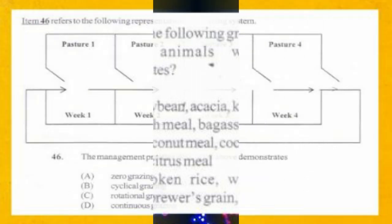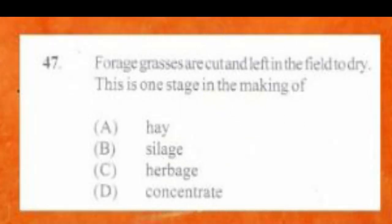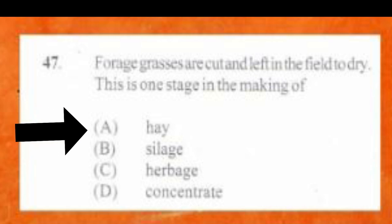Question number 46. Item 46 refers to the following representation of a grazing system. The management practice illustrated demonstrates: A. Zero grazing, B. Silage grazing, C. Rotational grazing, D. Continuous grazing. The answer is C, rotational grazing. Question number 47. Forage grasses are cut and left in the field to dry. This is one stage in the making of: A. Hay, B. Silage, C. Herbage, D. Concentrate. The answer is A, hay. Remember that for silage, you store them while they have their moisture content so they can be decomposed.